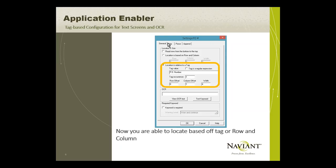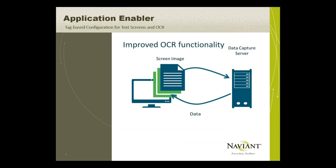Also in OnBase 15, Application Enabler leverages the data capture server to better serve customers using OCR to capture data from their application screens. The data capture server provides more consistent OCR results and adds support for ClearType fonts and non-Latin alphabets. App Enabler takes a screenshot of the enabled screen when the event is triggered, sends the image to the data capture server where it's processed and data extracted, then sends it back to App Enabler to retrieve documents, assist indexing, or create a new document. If you already own the data capture server, you can leverage your current instance; a license is free and can be obtained from your first line of support.